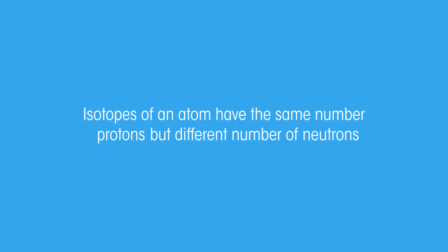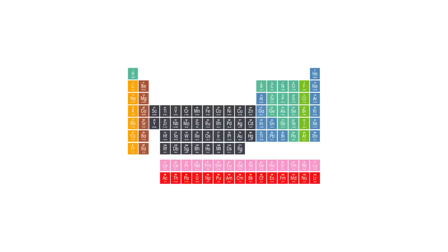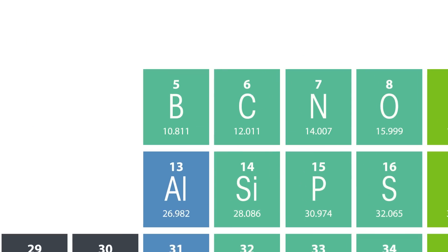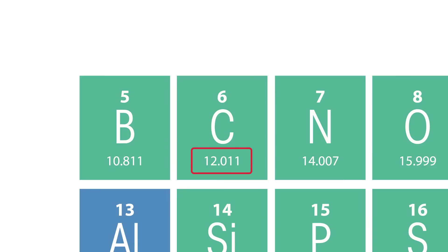The different isotopes do however have identical chemical properties. If you ever wondered why some of the mass numbers in the periodic table aren't whole numbers, this is because the mass shown in the periodic table is a weighted average of all the atoms of that element — so of all the different isotopes. If it's close to a whole number, that usually means there's only one common isotope.